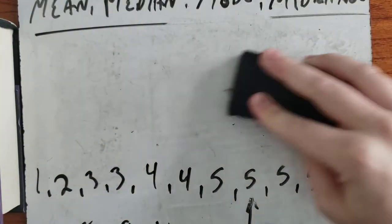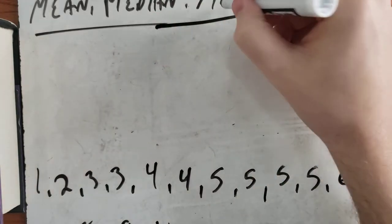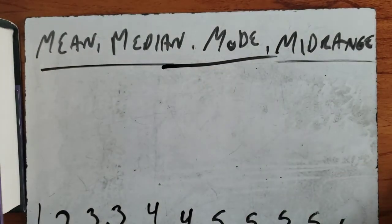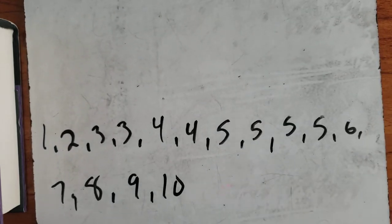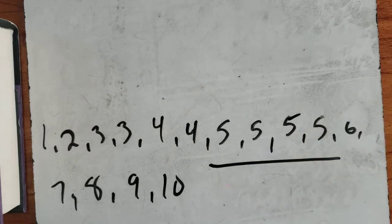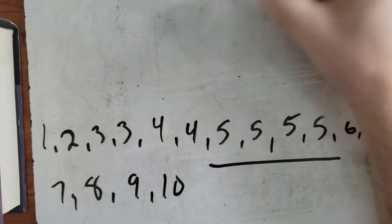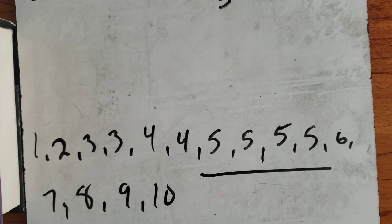The mode is the number that appears the most times. It's simple to remember because mode sounds like 'most.' Our numbers are already in order, so it's easy to see which one appears the most. Looking at the numbers, which appears more than any other? Five — it appears four times. So the mode is 5.